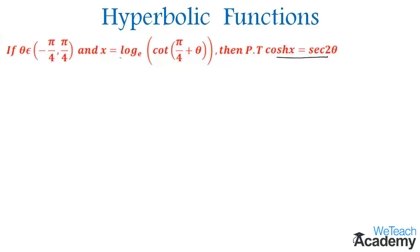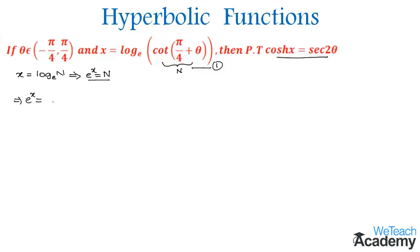In order to prove this, we are given with the equation — let us name this as equation 1. Using the concept of logarithms, x equal to log n to the base e implies we can write this in exponential form as e power x is equal to n. By comparing both equations, we get e power x equal to cot of pi by 4 plus theta.